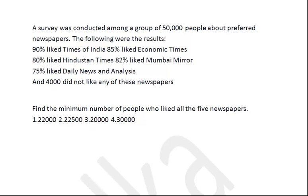One more problem from our no paper pen series. You can also be part of this group — just join us on Facebook. The problem is from set theory, or you can say Venn diagrams. A survey was conducted among a group of 50,000 people about preferred newspapers. The results: 90% like Times of India, 85% Economic Times, 80% Hindustan Times, 80% another paper, 75% Daily News and Analysis, and 4,000 did not like any of these newspapers. Find the minimum number of people who liked all 5 newspapers.